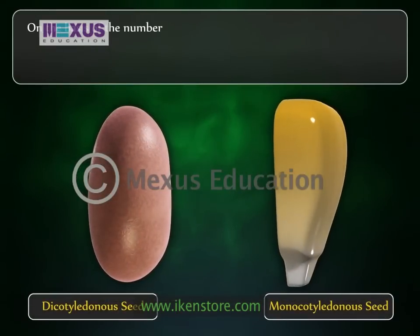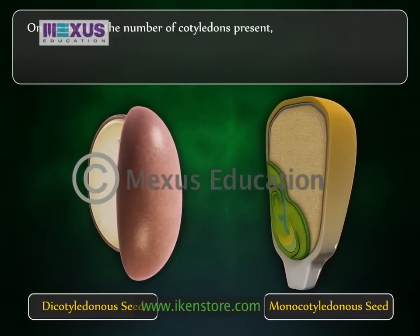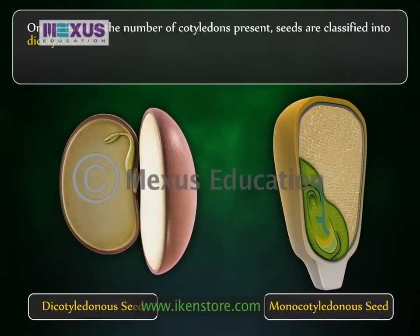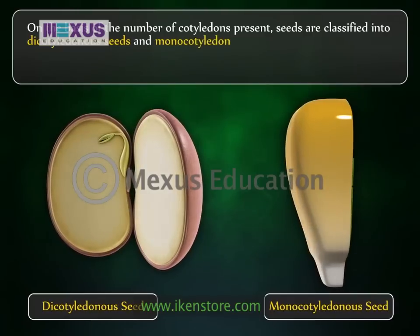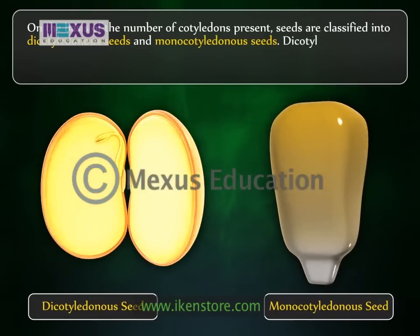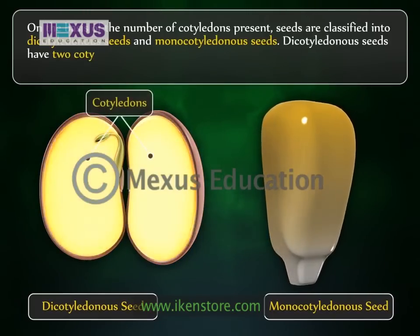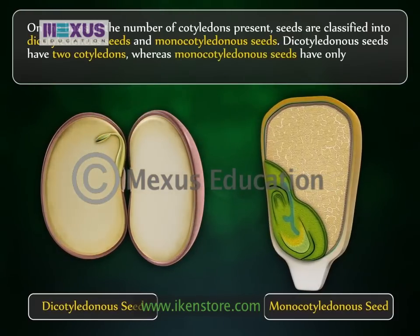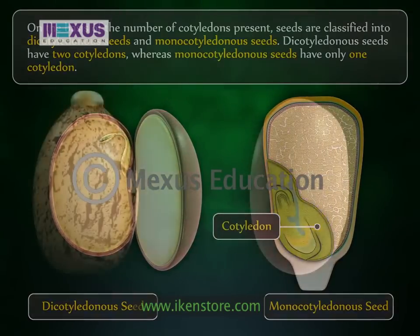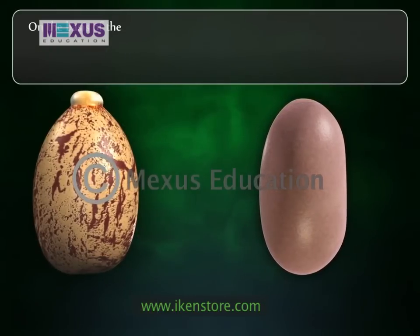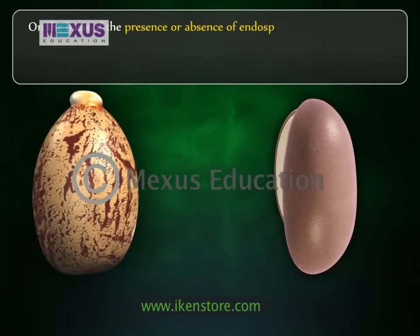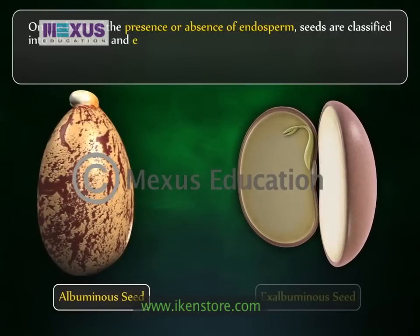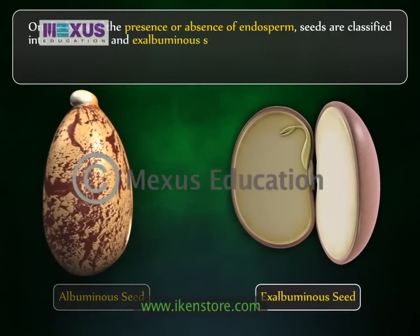On the basis of the number of cotyledons present, seeds are classified into dicotyledonous seeds and monocotyledonous seeds. Dicotyledonous seeds have two cotyledons, whereas monocotyledonous seeds have only one cotyledon. On the basis of the presence or absence of endosperm, seeds are classified into albuminous and exalbuminous seeds.